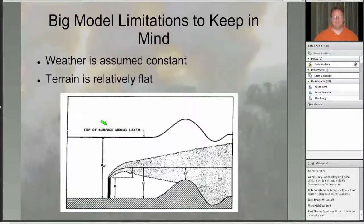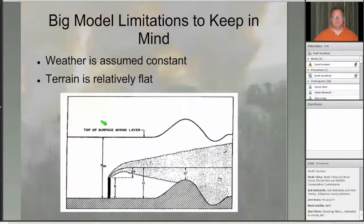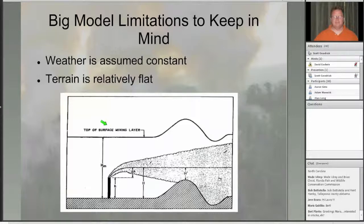Now, some assumptions and limitations of the model. One big one is that a Gaussian plume model like vSmoke assumes that weather is constant — not changing. You give it fixed parameters that are uniform in space and constant. Depending on how long your burn lasts will partly determine how valid this assumption is, and also your location. If you're on the coast in a sea breeze area, your ability to have constant weather is greatly reduced.